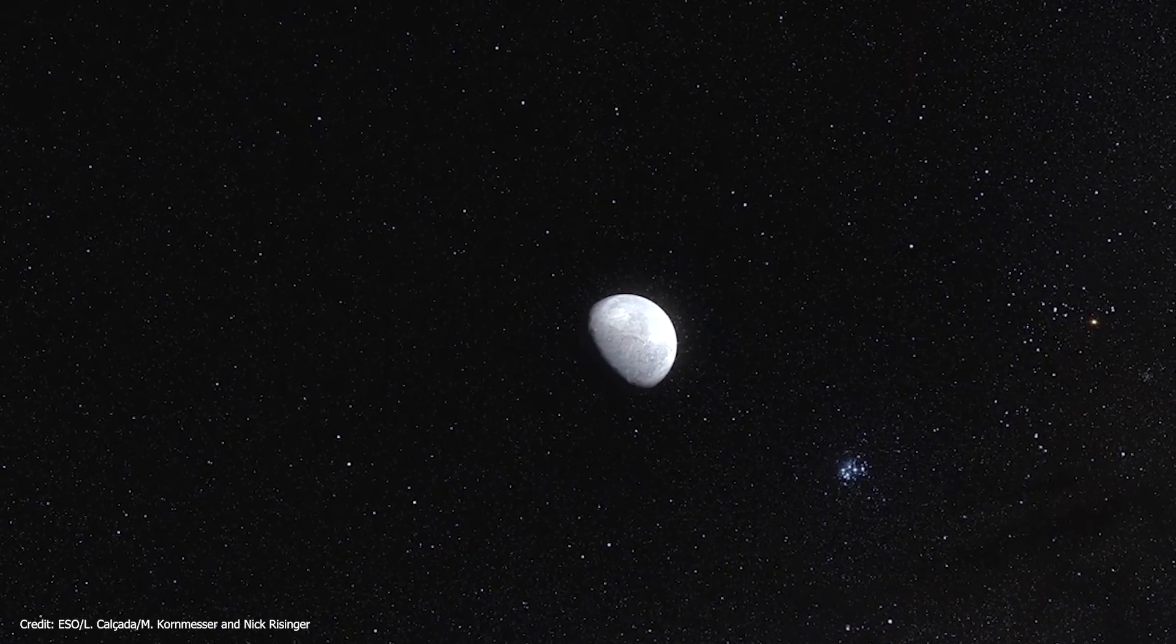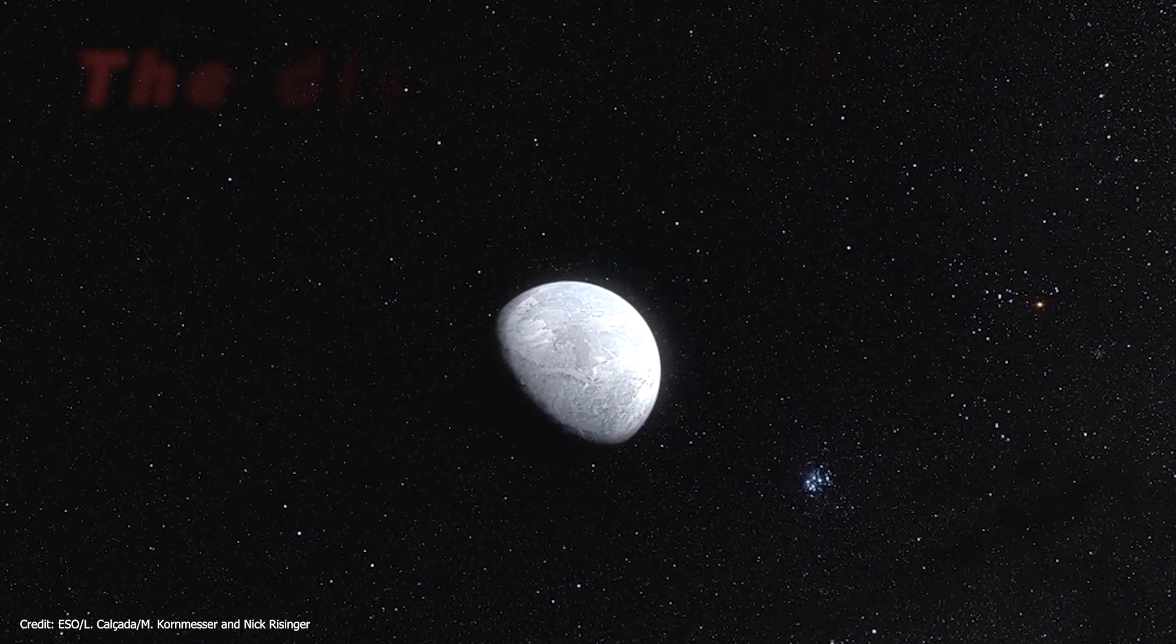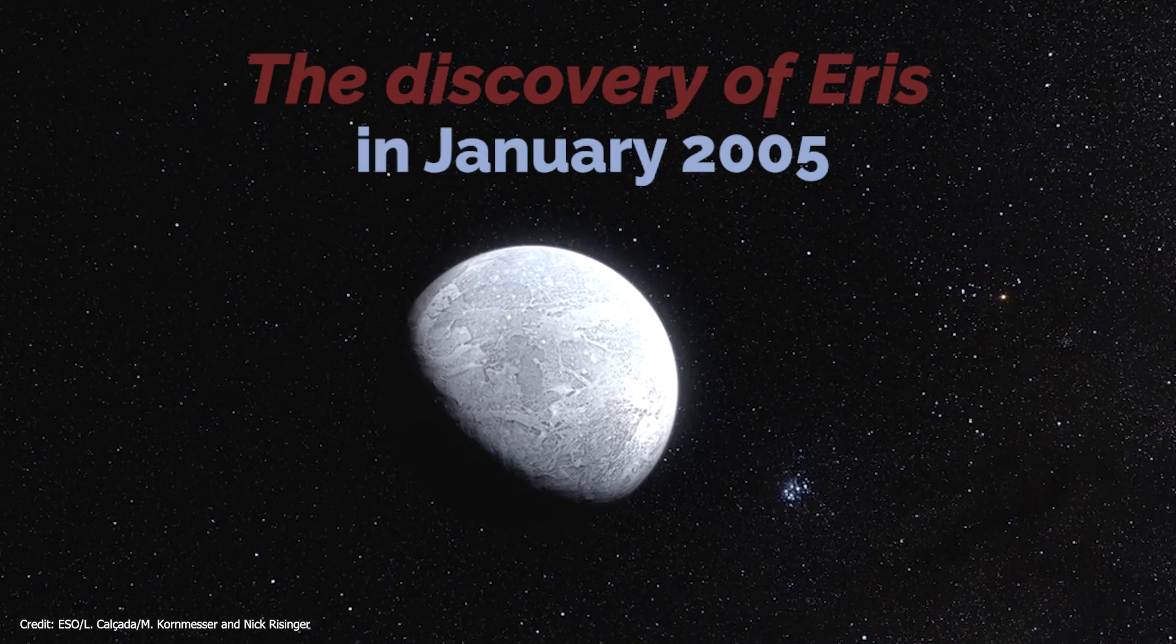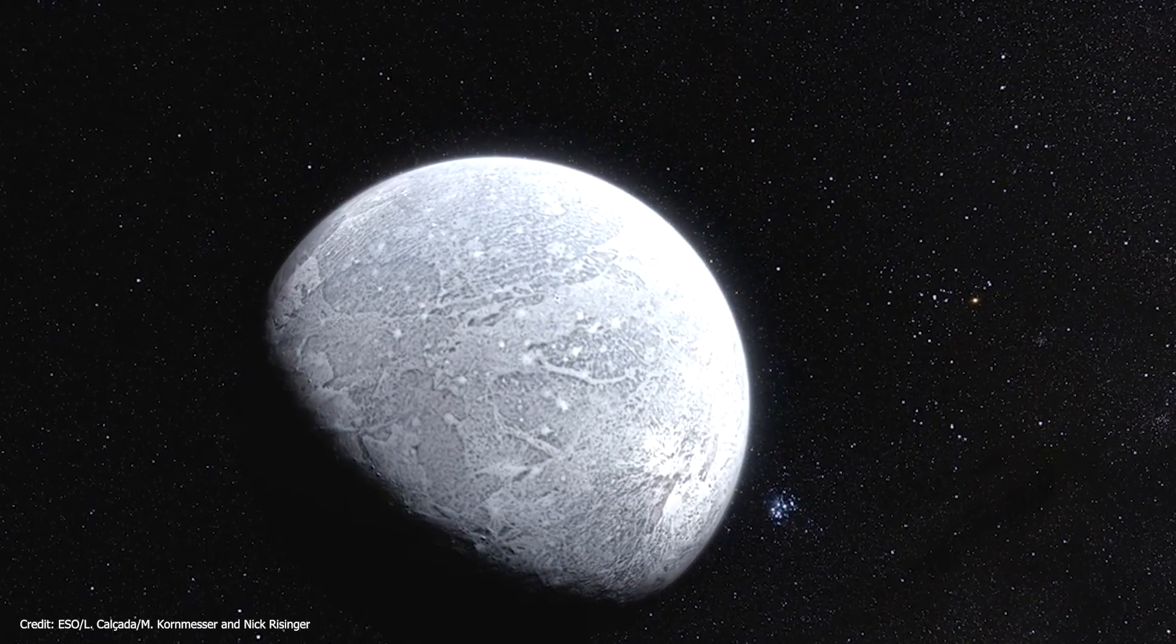However, the event that led to the defenestration of Pluto was undoubtedly the discovery in January 2005 of the object we now know as Eris, defined at the time as the tenth planet of the solar system.